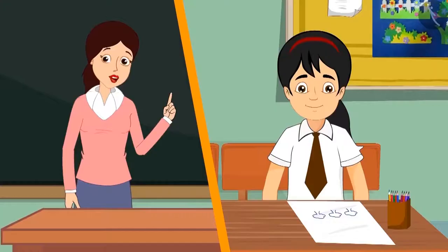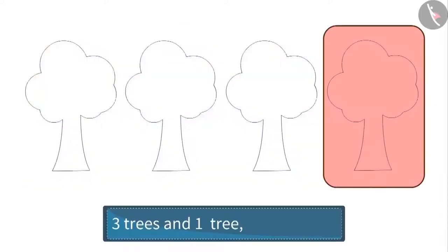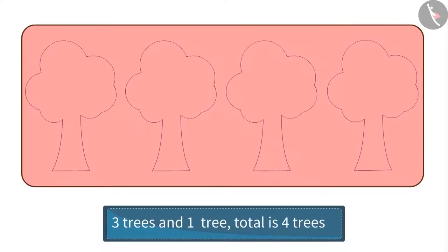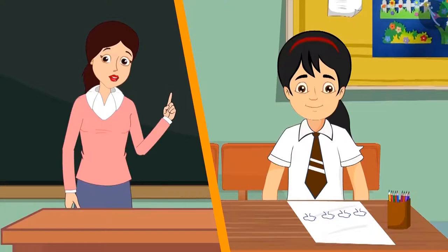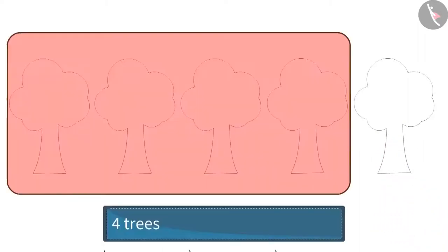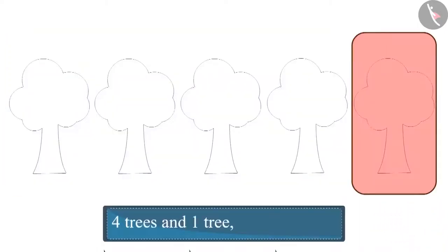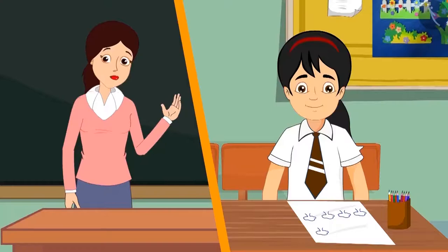Okay, suppose if I draw one more tree along with these three trees, how many trees will be there in total? Three trees and one more tree — so in total there are four trees. Very good, Pinky. If I make one more tree along with these four trees, then how many trees will be there? Four trees and one more tree — then in total there are five trees. Very good, Pinky. Come on, now complete your drawing.